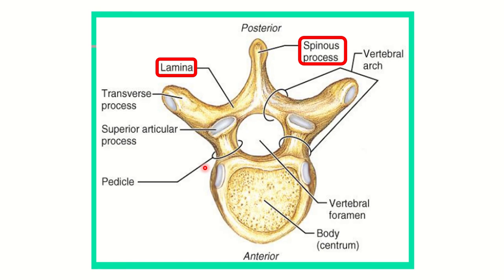The transverse process is present in the lumbar vertebra. The spinous process arises from the junction of the two laminae — here is the lamina on each side. On the other hand, the pedicle connects the body with the other part of the vertebra. So, importantly, in the lumbar vertebra the spinous process arises from the junction of the two laminae, and the pedicle connects the body to the rest of the vertebral arch.